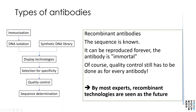Recombinant antibodies are one way of solving this problem. Through immunization and DNA isolation, or even through synthetic libraries, and with display technologies, selection for specificity, and quality control, we can get an antibody with a known sequence. In these cases the sequence is known, and for this reason the antibody can be reproduced forever — in other words, the antibody has become immortal. Quality control still has to be done as for every antibody. Most experts would agree that these recombinant technologies are the future to get around the problems we have discussed.